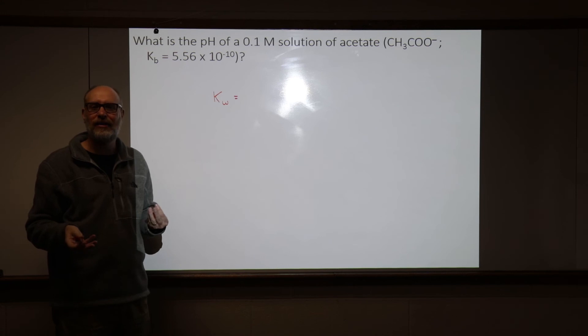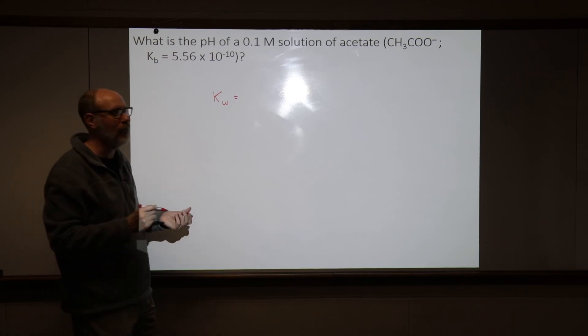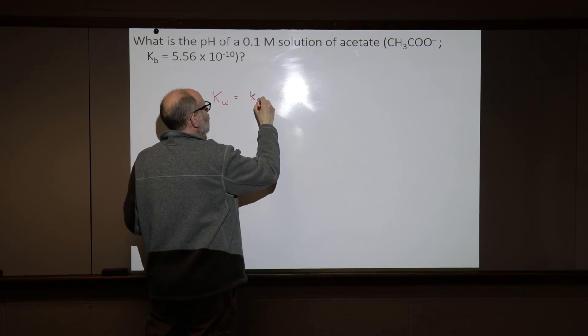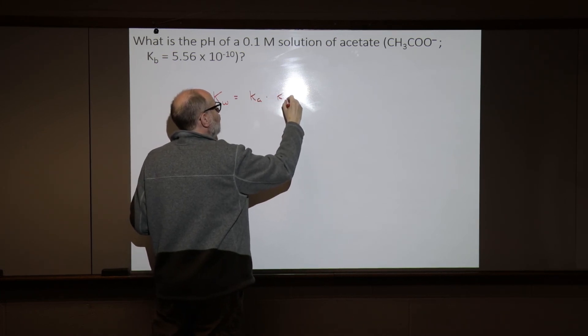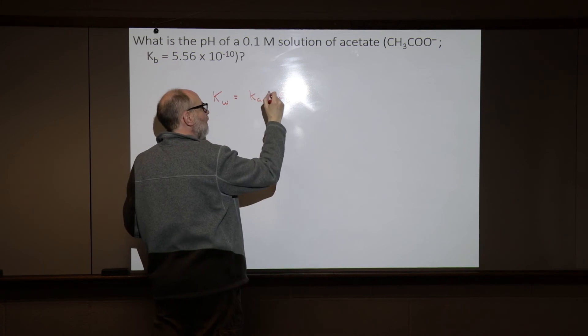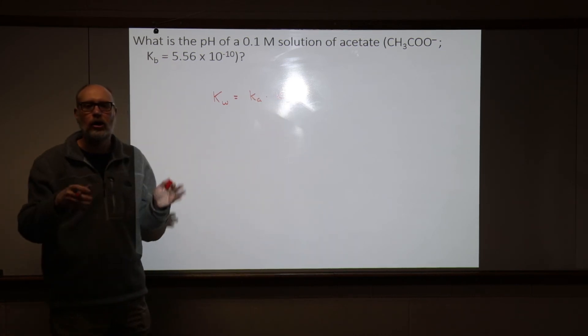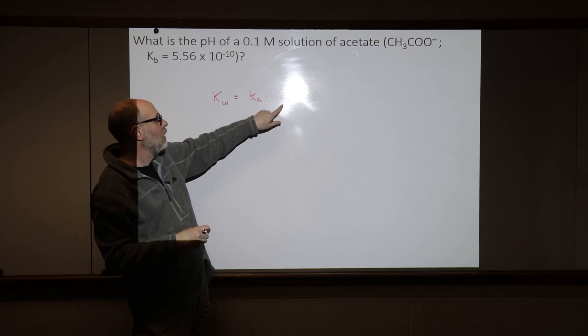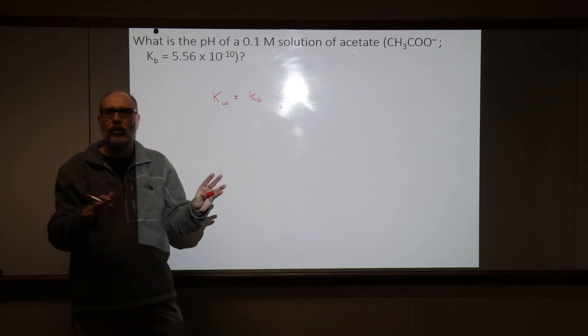And I'm not going to go through why this is the case. I'm going to tell you that this is the case. And that is that Kw is going to be equal to the Ka times the Kb. As long as the acid and the base that we're talking about are conjugate acid-base pairs. So, if this were acetic acid and that were acetate, this works just fine.